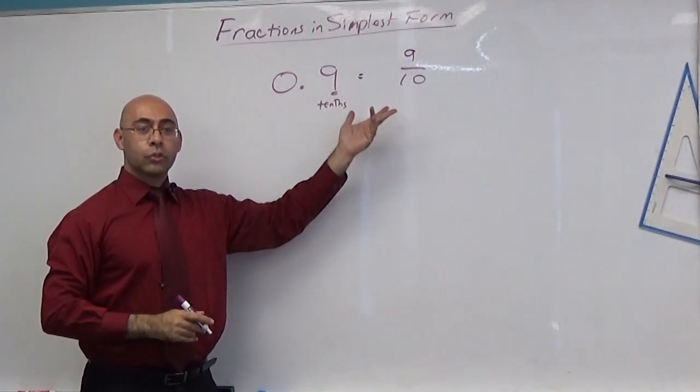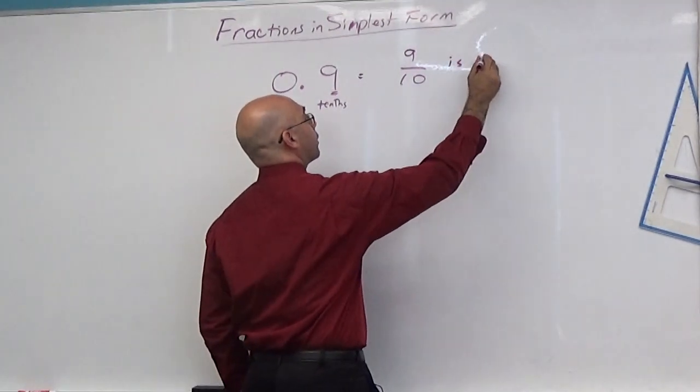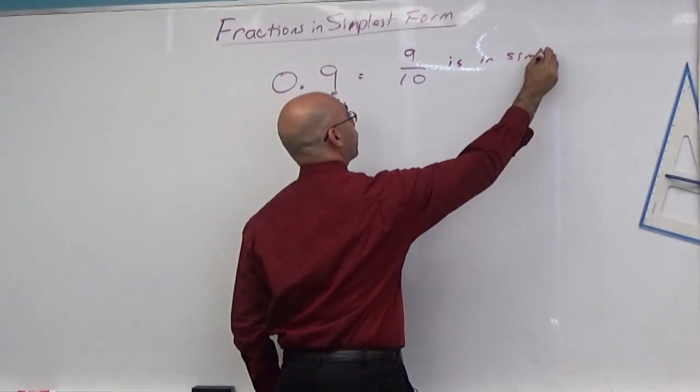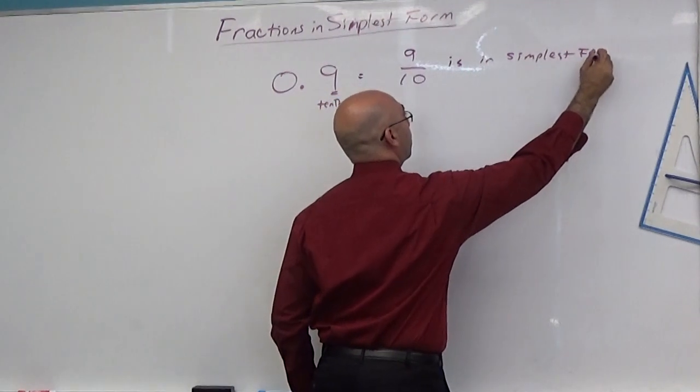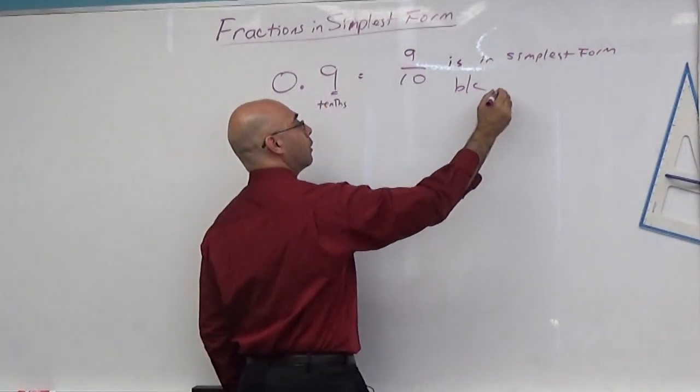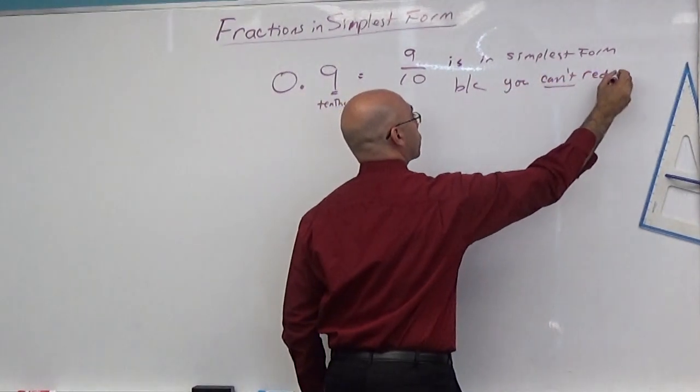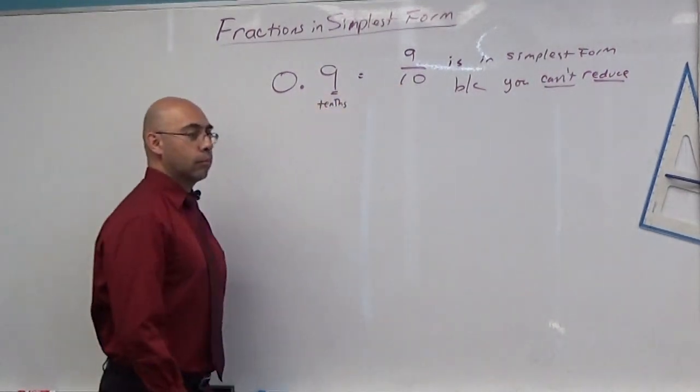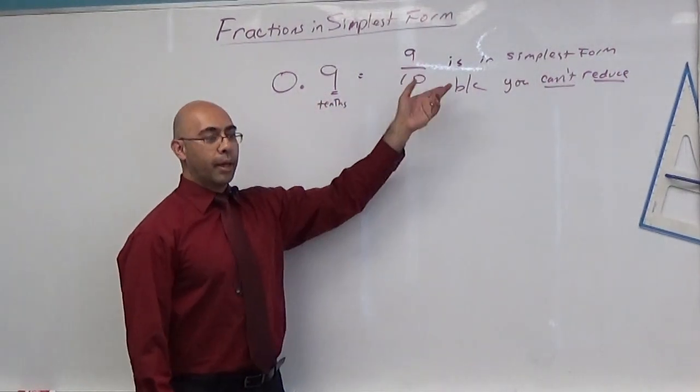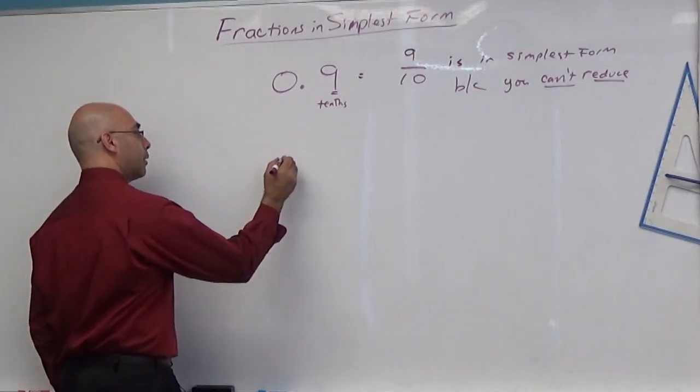No, so this is considered in simplest form because you can't reduce. Reducing means I can divide the top and bottom by the same thing. Now what if I had this decimal, 0.4?